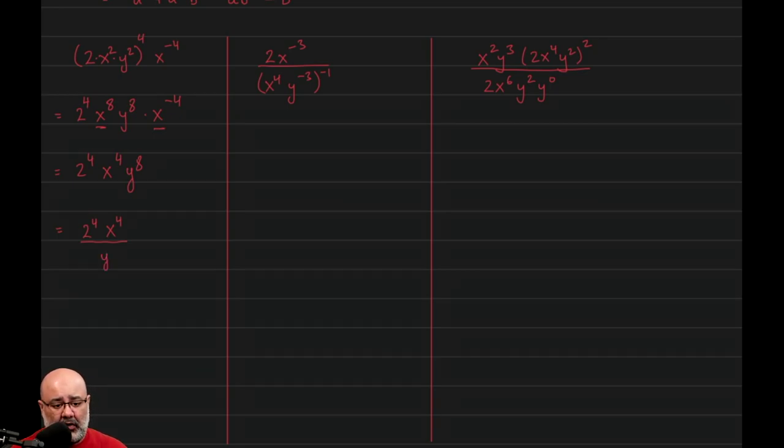So I use the negative power property which says anytime a term moves from top to bottom or bottom to top, doesn't matter which direction they're going in, just that the terms are moving, the sign on the power changes. So the y to the 8 becomes y to the negative 8.